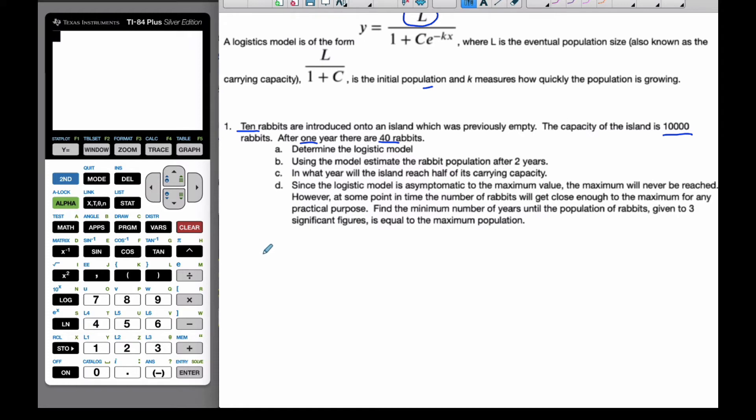And after one year I know there are 40 rabbits. So, I know that the initial is 10, and L is going to be 10,000, and I know there is one year, there are 40 rabbits. And so, I'll make my function R of T, because it's time and it's rabbits.